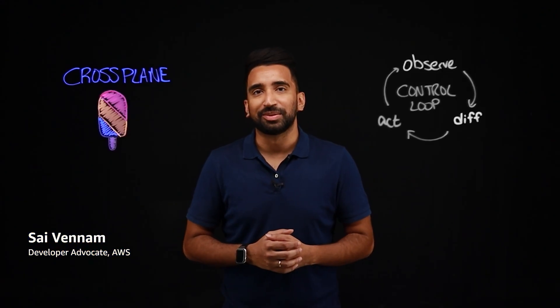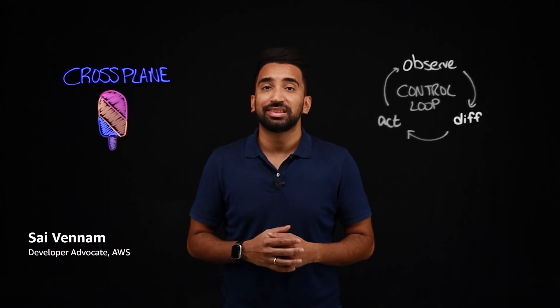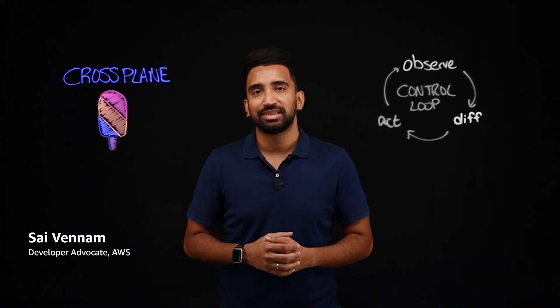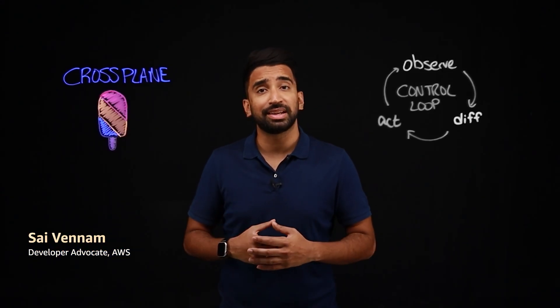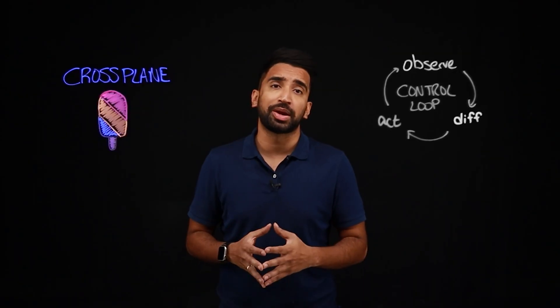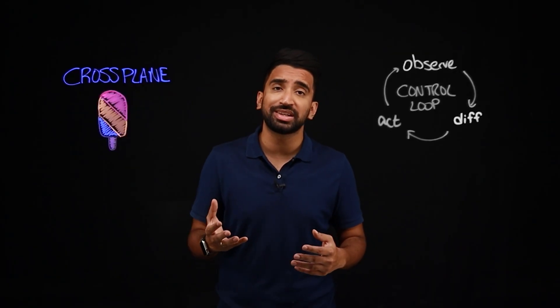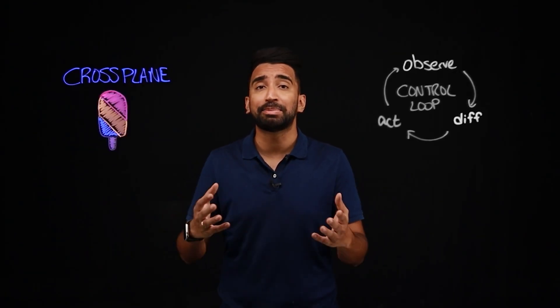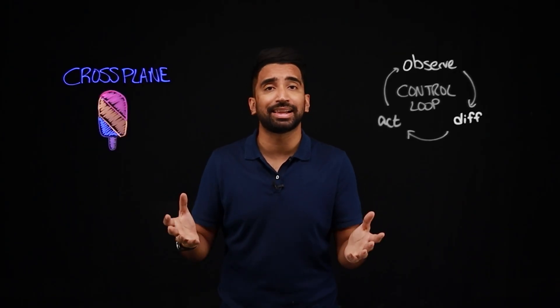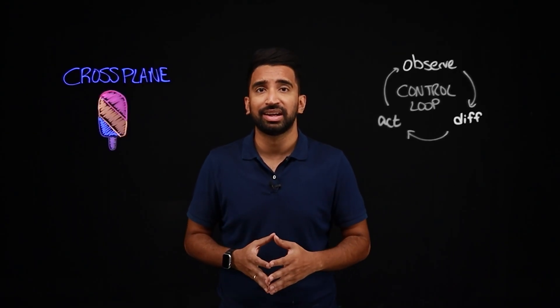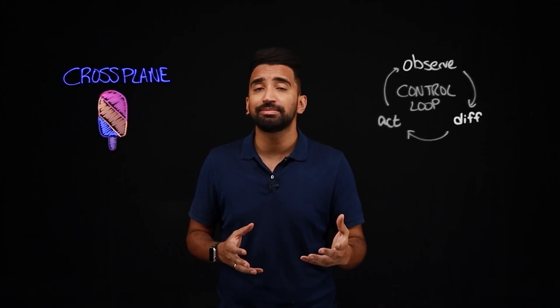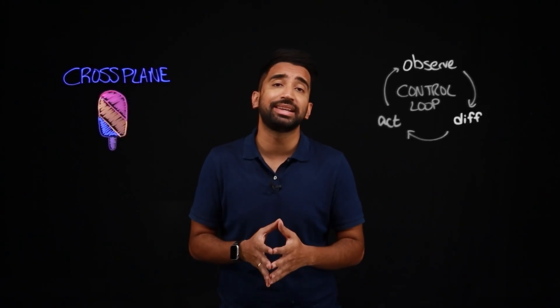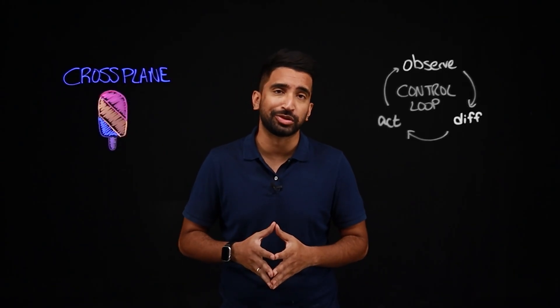Hi everyone, Sai Venom here with AWS. Today, let's talk about Crossplane. Crossplane is an open source framework to provision and consume infrastructure in basically any cloud service provider, and notably uses a Kubernetes API to do so.